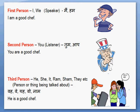If the speaker is talking about himself, his opinions, or his feelings, then it is called the first person. When he talks about it in English, he uses 'I' or 'we'. For example: I am a good chef, I am a good cook.